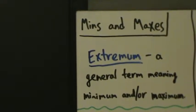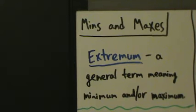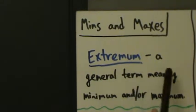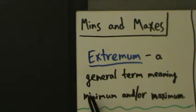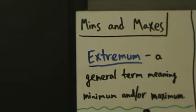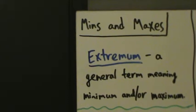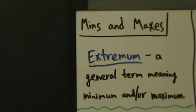In the last video we introduced minimums and maximums and talked a little bit about the theory behind them, gave some definitions and all that. So here are a few more definitions and then another example. Extremum is just a general term that basically refers to a minimum or a maximum. So if you say something like the function does not have an extremum at this point, that means it does not have a minimum or a maximum there. So extremum just means either one — min or max.